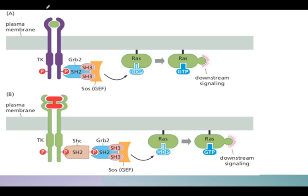The plasma membrane contains the growth factor receptor. Upon binding of the growth factor with the receptor tyrosine kinase complex, GRB2 — Growth factor Receptor-Bound protein 2 — is involved. GRB2 is responsible for the phosphorylation of a tyrosine on the receptor. GRB2 also activates a Guanine Exchange Factor called Son of Sevenless (SOS), and this SOS leads to the activation of Ras.